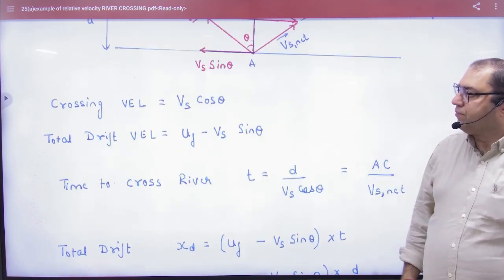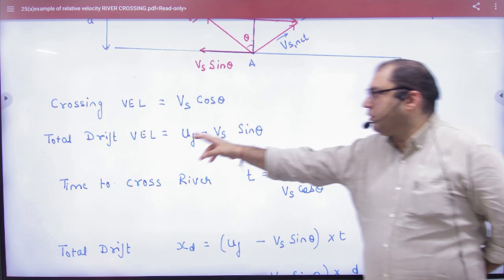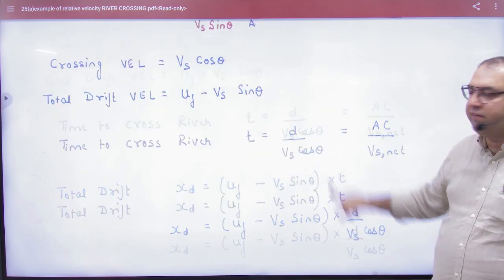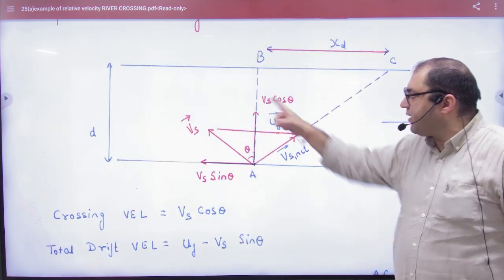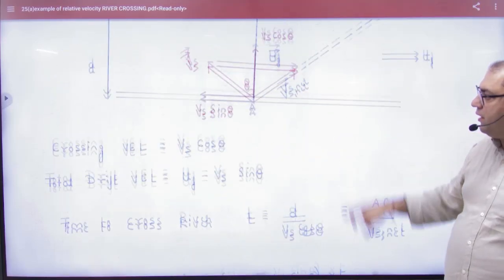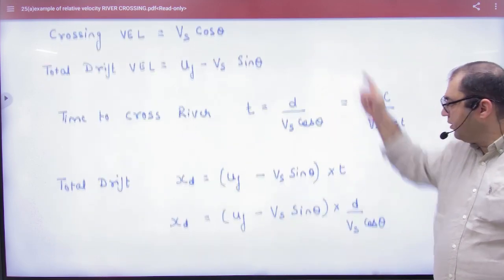So it is written that for the river crossing, Vs cos theta is responsible. For the drift velocity, Vr minus Vs sin theta is responsible. And time to cross the river? You have to divide d by Vs cos theta. If you don't do this, you can do this too: divide AC by V net. That's the same thing.